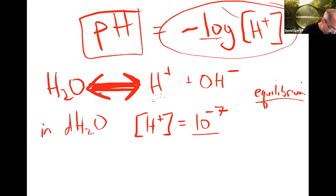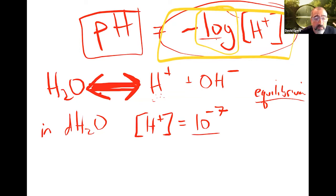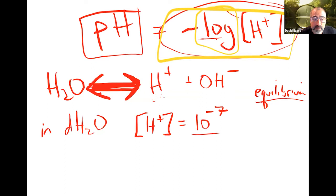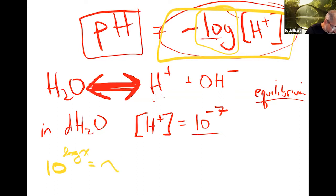If I want to find the pH of distilled water, I use the formula. What does log mean in math? It's the power — the exponent — you have to raise 10 to in order to get the number. So 10 to the log X equals X. Whatever power you need to put there, 10 to the what gives you X — that number is the log of X.